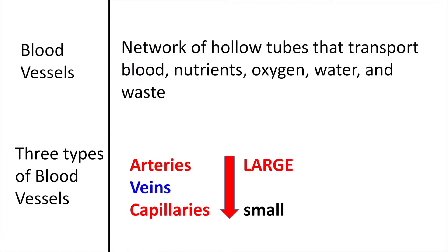Blood vessels are a network of hollow tubes that transport blood, nutrients, oxygen, water, and waste — the things that we need as well as the things that we need to get rid of. There are three types of blood vessels: arteries, veins, and capillaries.